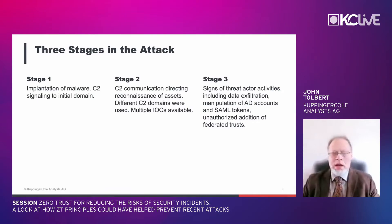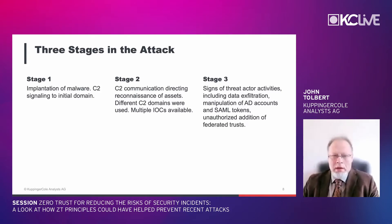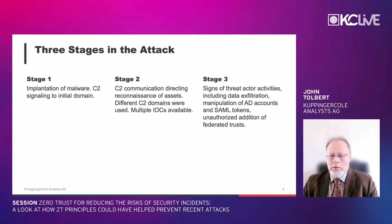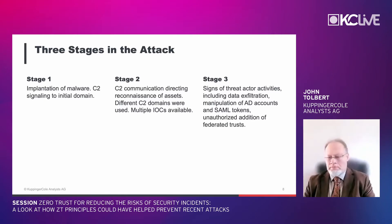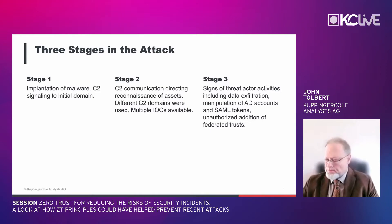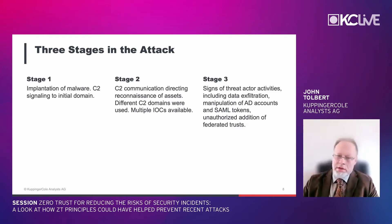Three identified stages of the attack: Stage one is simple malware implantation — the 18,000 companies that downloaded it. Signs of this include initial signaling to a command-and-control domain. Stage two is more serious — different C2 domains may have been contacted, and there may have been internal reconnaissance. Multiple indicators of compromise are available through cyber threat intelligence sources to help determine if an organization reached stage two. Stage three is full compromise, including data exfiltration, manipulation of Active Directory accounts, added accounts, SAML tokens, and unauthorized addition of federated trusts.